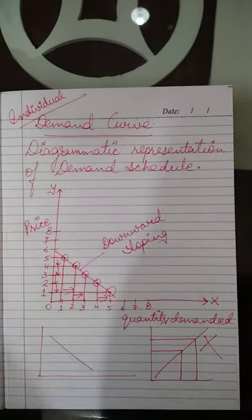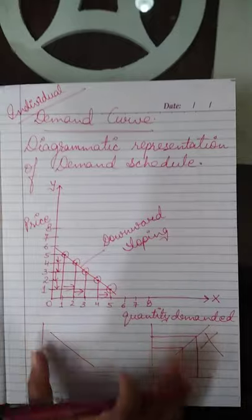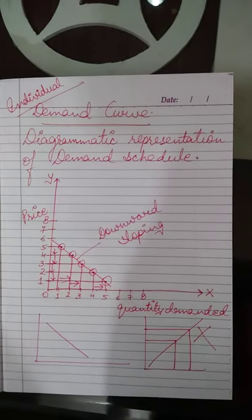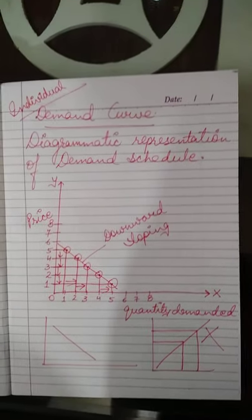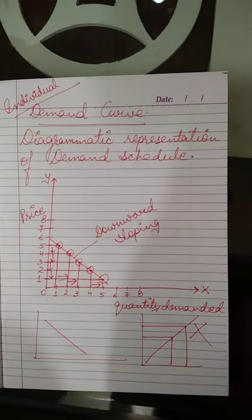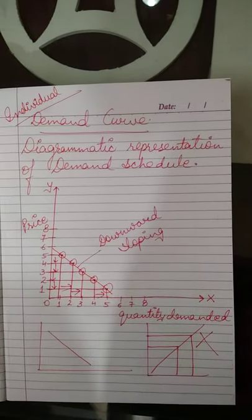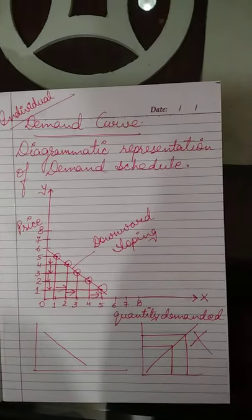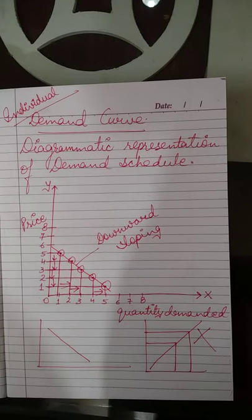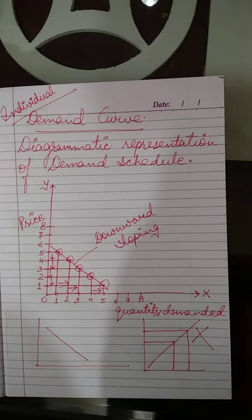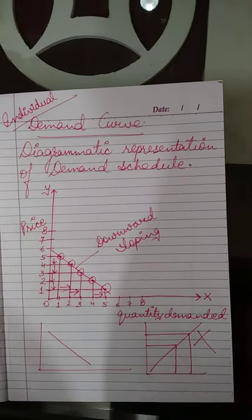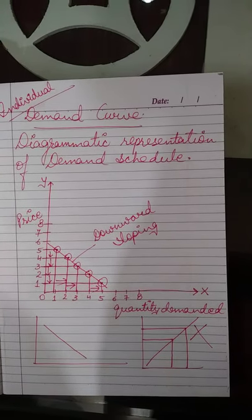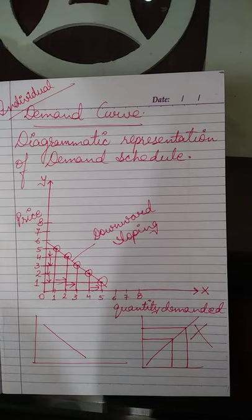यह हमारे पास individual demand schedule है और यह individual demand curve है। Demand curve is downward sloping because price और quantity demanded में inverse relationship है। Kindly go through today's topic; tomorrow I will discuss the next topic — that is market demand, market demand schedule, and market demand curve. Thank you everyone, take care, have a very nice day।